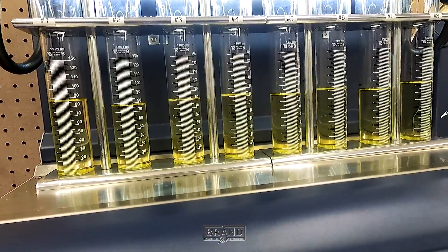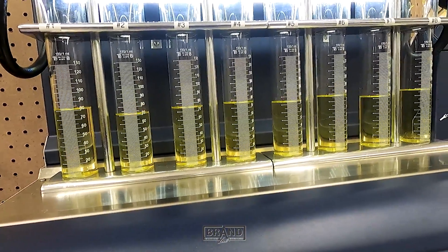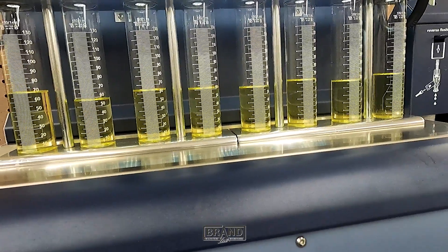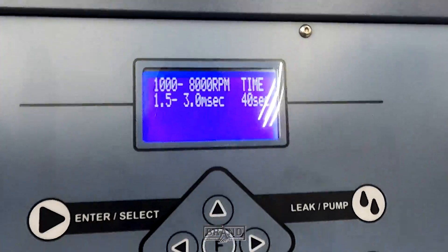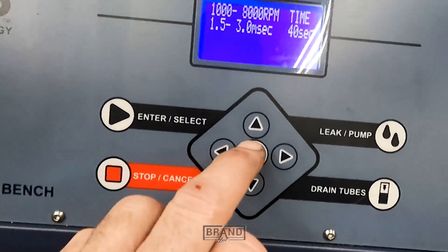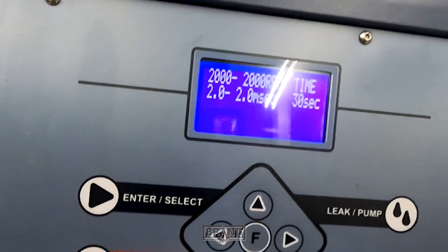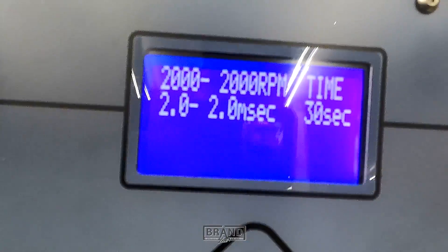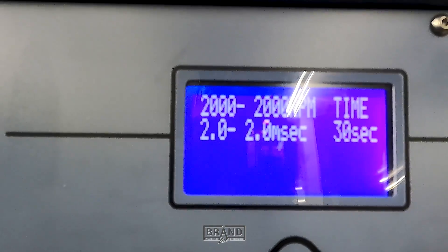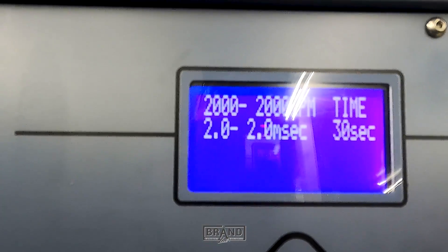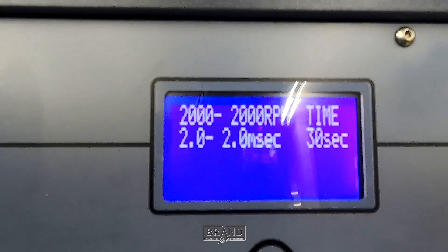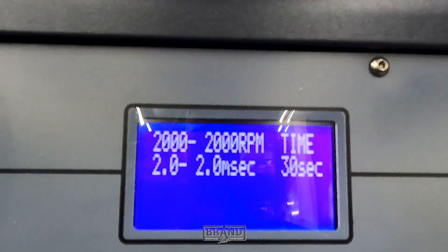Let me dump the tubes here. And while that's draining down, we'll go back here and let's just change our setup here. We'll just run a test, say at 2000 RPM steady, 2 milliseconds for 30 seconds and see what kind of results we get.